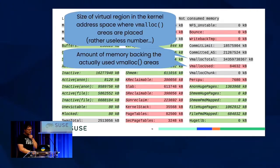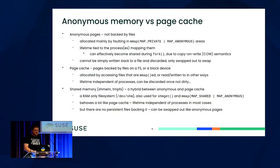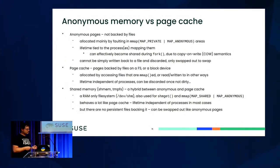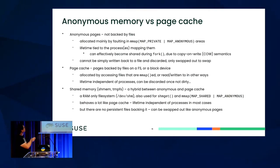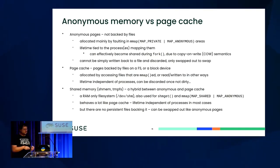Now for the green user space fields. There are things like Anon and File and Active and Inactive. We distinguish anonymous pages that processes allocate mainly by mmap with MAP_PRIVATE and MAP_ANONYMOUS. When they access these areas, the pages are allocated and are private to the process. When the process exits, this is all released. Sometimes they can become shared, which we'll see later.